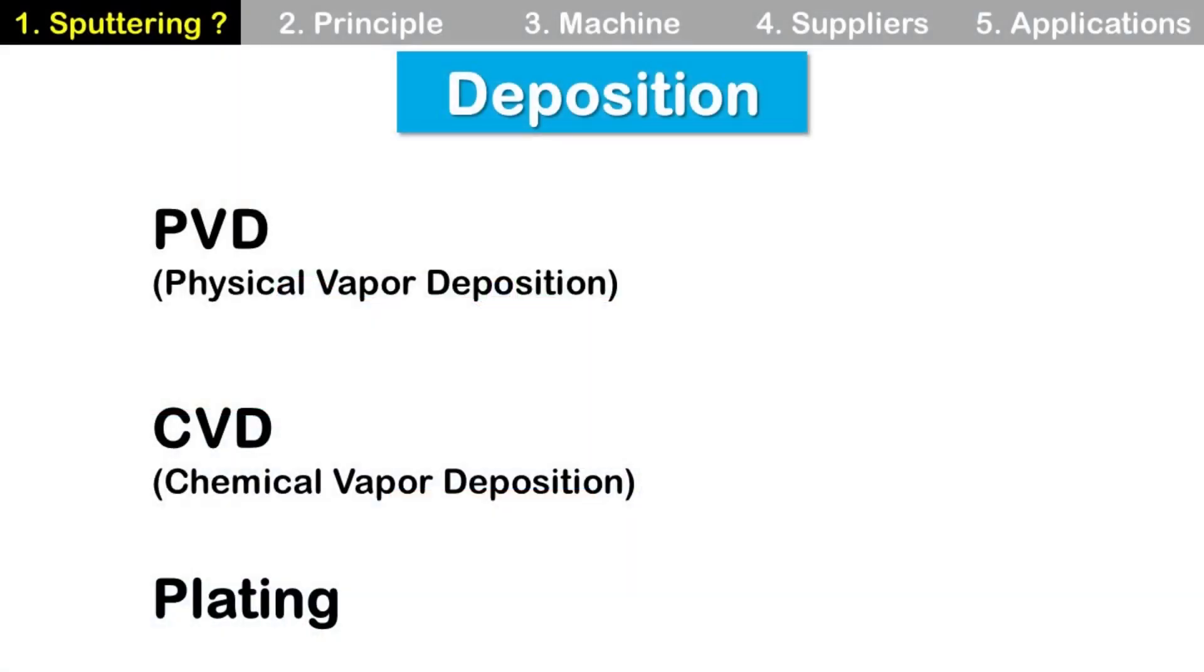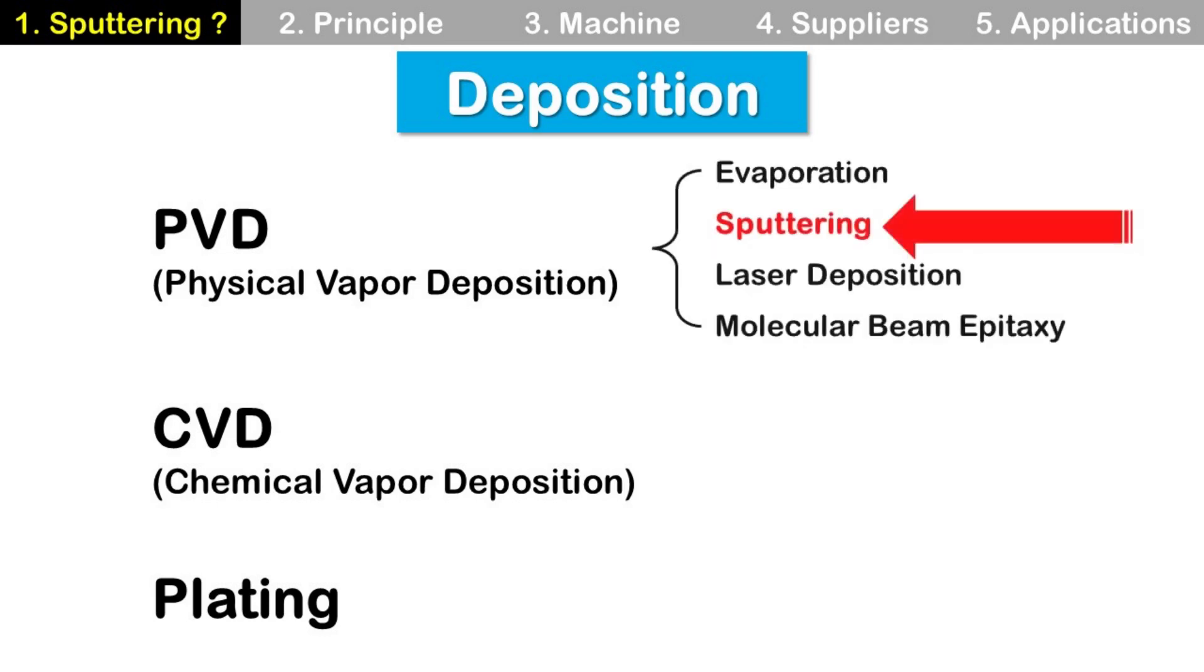For thin film deposition in semiconductor, there are many technologies. PVD (physical vapor deposition), CVD (chemical vapor deposition), and plating are popular technologies. Sputtering is a type of PVD which uses physical principles to deposit thin film on substrates like silicon wafers.